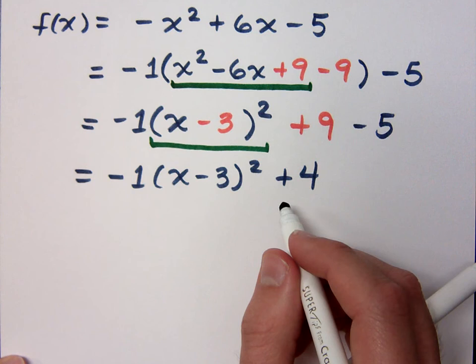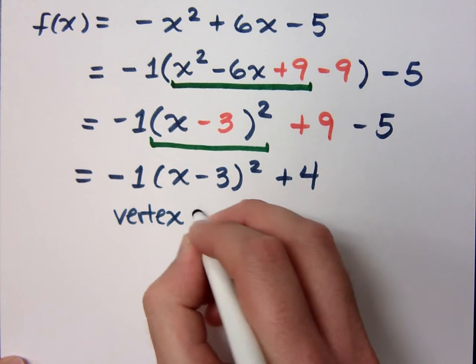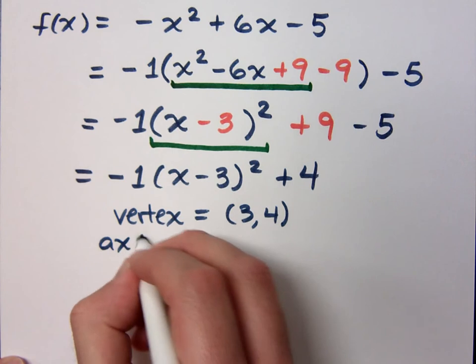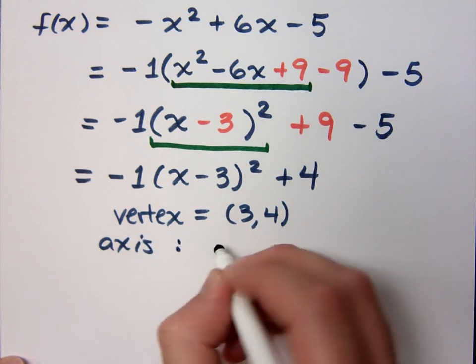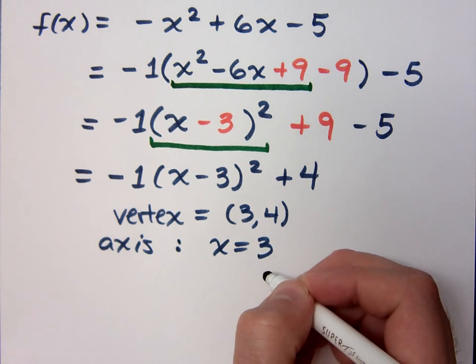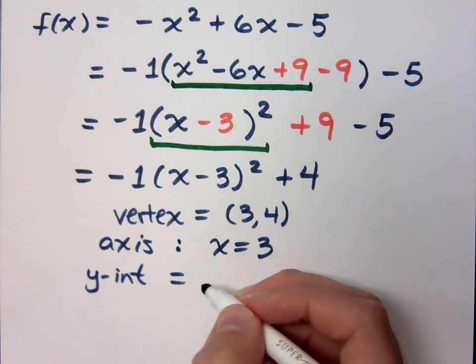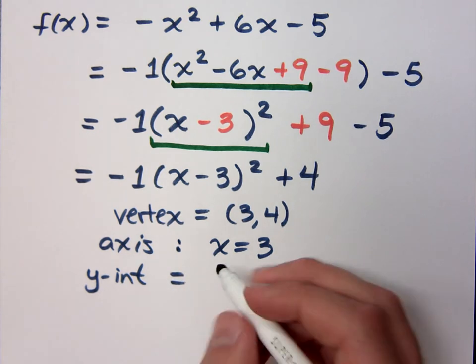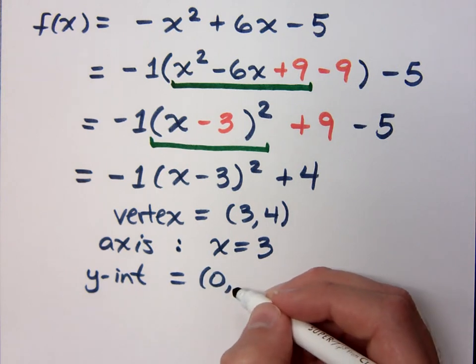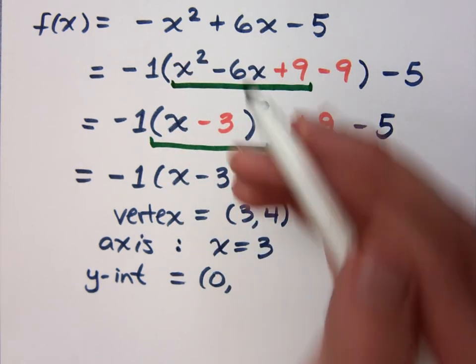From this form right here, can you tell me the vertex? Positive 3, positive 4. Can you tell me the axis of symmetry? x equals 3. Let's go ahead and do the easy part. Can you tell me the y-intercept? Remember, you can go back to the original function to find the y-intercept. What is it? It's just negative 5, right? If I plug in 0, that guy's gone, that guy's gone, I get negative 5.